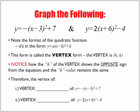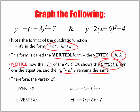Let's graph the following. Note the format of the quadratic function: it's in the form y equals a(x minus h) squared plus k. Here's our format. It's in what we call the vertex form. This is the vertex form because the vertex, when it is written in this form, is in the form of h and k. Now notice here how the h of the vertex shows the opposite sign from the equation, but the k value remains the same. So take a moment and try to figure out what the vertex is of the following two equations.